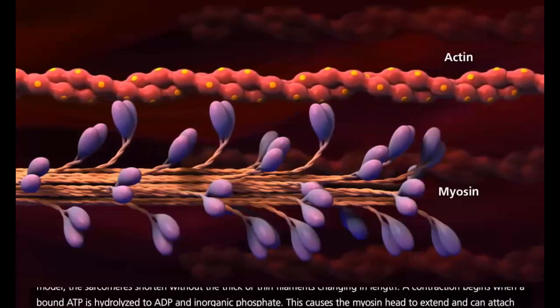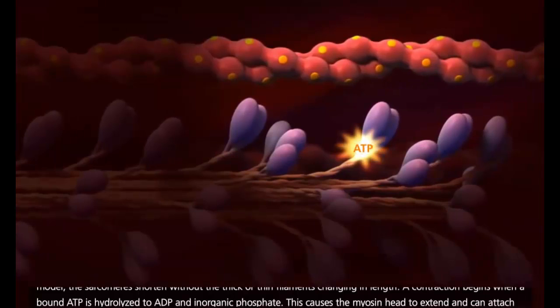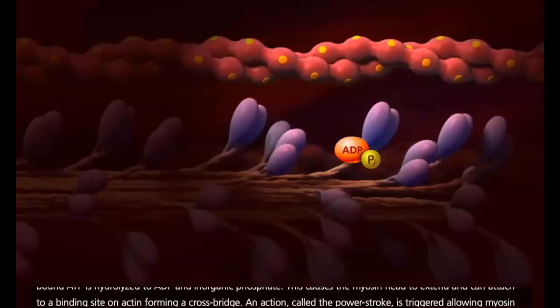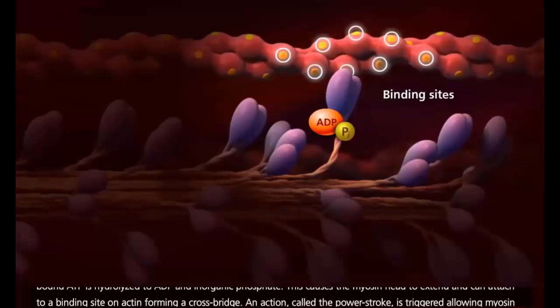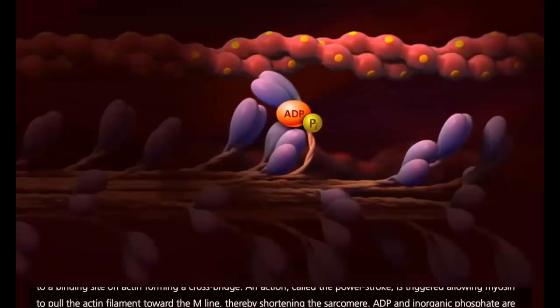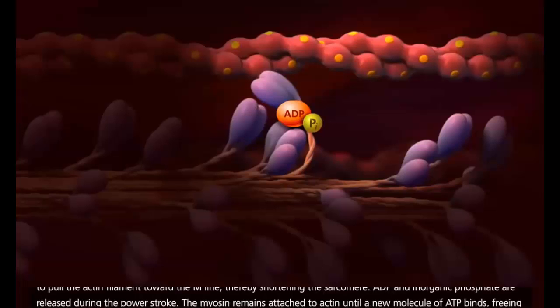A contraction begins when a bound ATP is hydrolyzed to ADP and inorganic phosphate. This causes the myosin head to extend and can attach to a binding site on actin, forming a crossbridge. An action called the power stroke is triggered, allowing myosin to pull the actin filament toward the M-line, thereby shortening the sarcomere. ADP and inorganic phosphate are released during the power stroke.